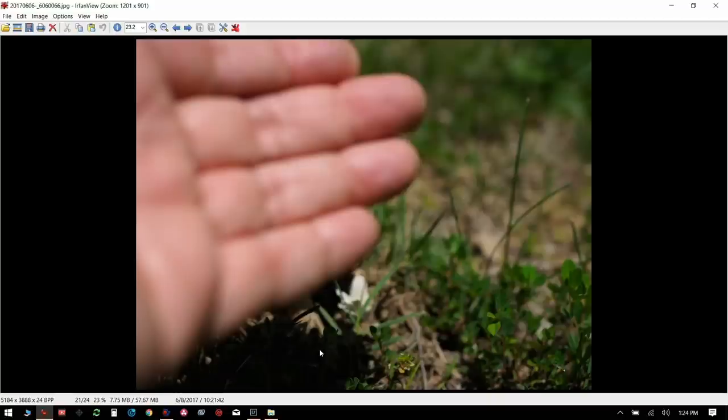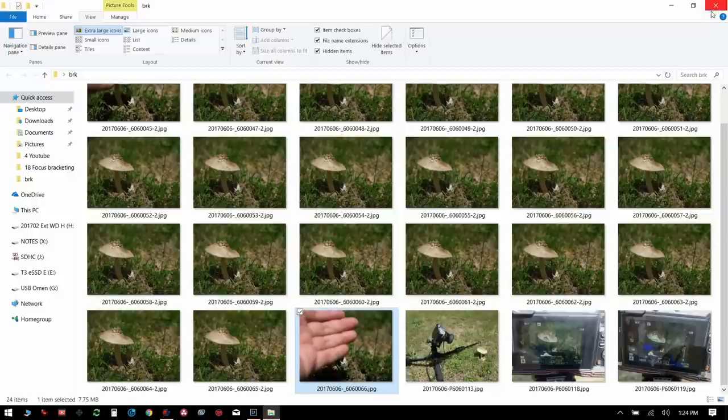When you're out there in the field and you're experimenting, when you come back in post, this makes it 10 times easier to see where one focus bracketing group starts and the next one starts. You'll need to experiment depending on the distance of the subject, the lens you're using, the focal length, the aperture. So you might end up taking several hundred pictures in just a few minutes. And then when you bring those back in post, this just makes it a lot easier to select the photos you want to process.